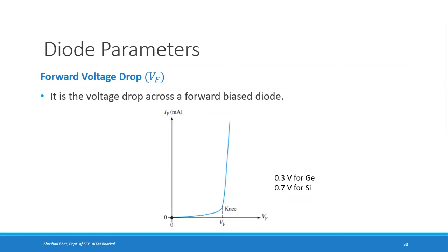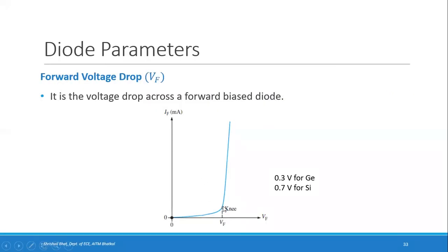The forward voltage drop is approximately 0.7 to 0.75 or maximum 0.8 volts for silicon, and 0.3 volts for germanium. That voltage you measure across the forward biased diode is called the forward voltage drop. The characteristic becomes almost a vertical line with a very small slope, so the voltage is almost constant.